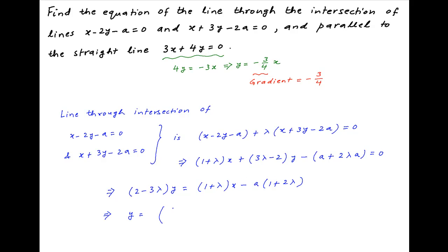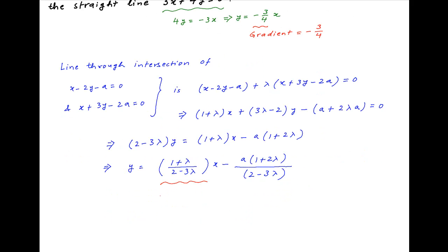Dividing both sides by 2 minus 3 lambda, we get y is equal to 1 plus lambda upon 2 minus 3 lambda times x minus a times 1 plus 2 lambda divided by 2 minus 3 lambda. The gradient of this line is therefore equal to the coefficient of x, which is equal to 1 plus lambda divided by 2 minus 3 lambda.